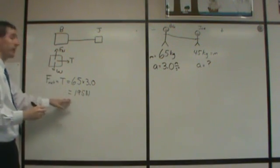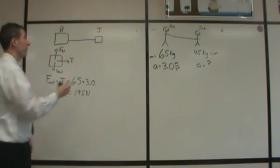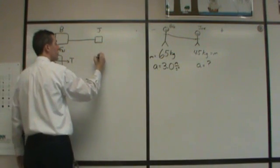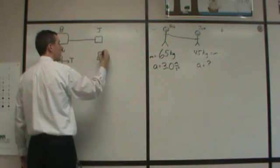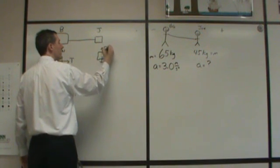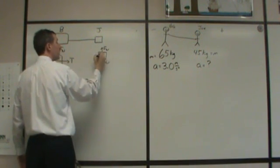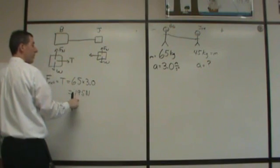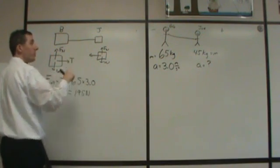What we can then say is that this force is equivalent to the force acting on Joe. If we draw Joe over here, again, we'll have a smaller weight, a smaller normal force, but that tension would be 195 N, although this time it would be in a negative direction.